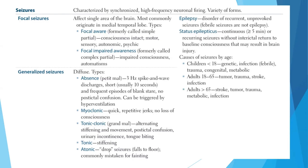Some briefing about focal and generalized seizures. Seizures are characterized by synchronized high-frequency neuronal firing and come in a variety of forms. Focal seizures have focal aware and focal impaired awareness subtypes. Focal seizures affect only a single area of the brain, such as a single lobe or part of one lobe, and are most commonly originated in the medial temporal lobe. This information is very important because sometimes they show you an MRI scan and ask what seizure type the patient may have.